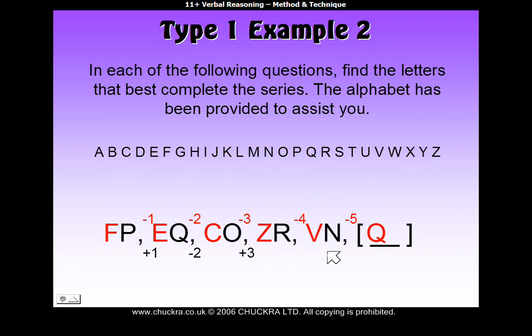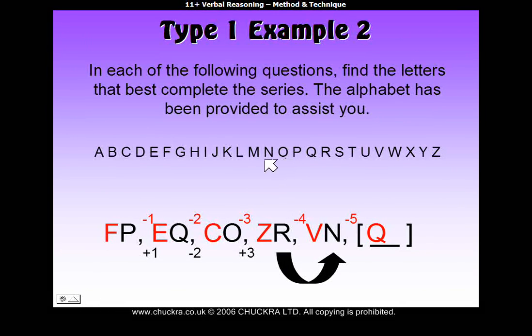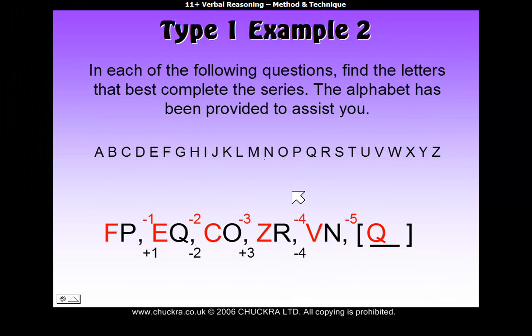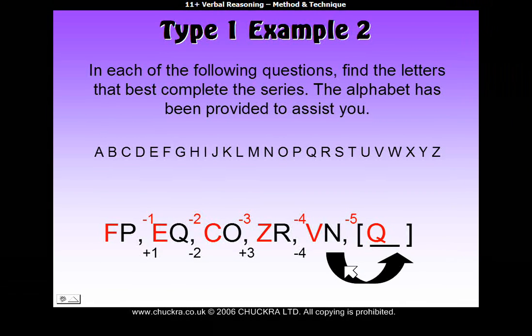And from R to N, starting at R, getting to N, we actually have to go backwards one, two, three, four. So, it's backwards four. So, can you spot the pattern? Plus one, minus two, plus three, minus four. So, the next thing to do will be plus five.